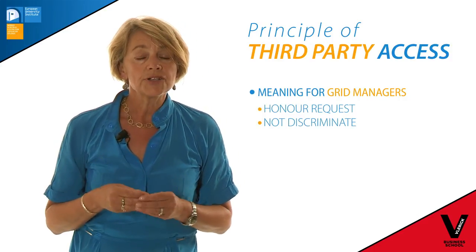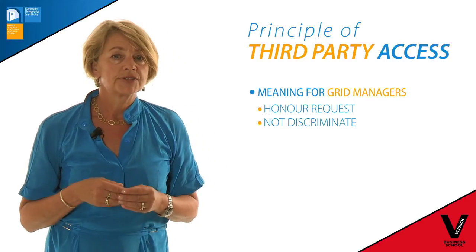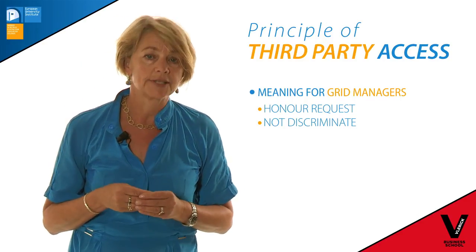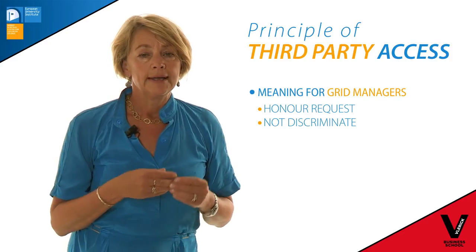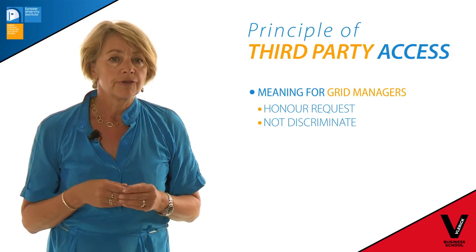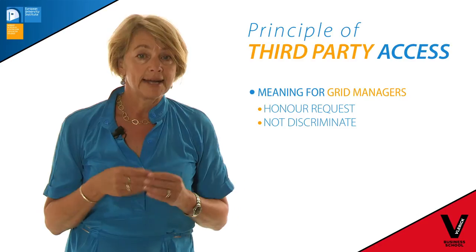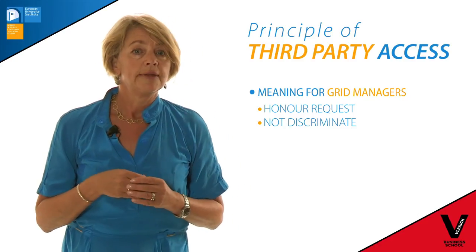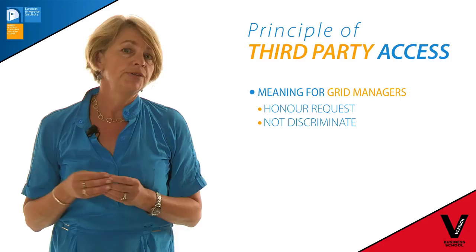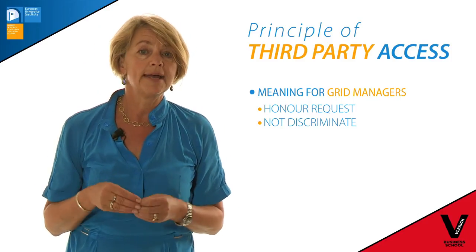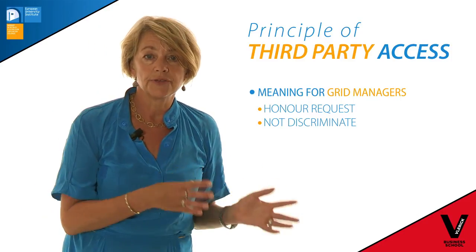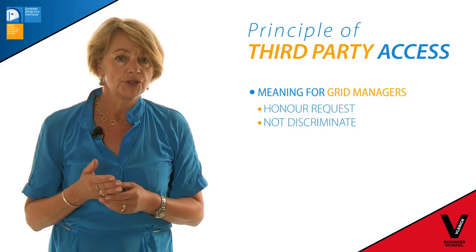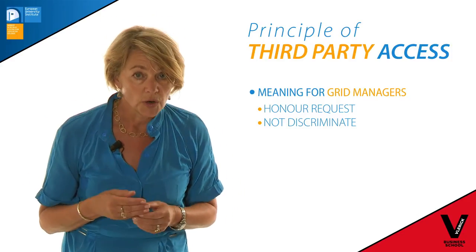More than that, you have to treat each request on the same terms — you must not discriminate. Therefore, if you're part of a large company that has supply interests as well as transmission interests, you must treat a third party in the same way as you would treat the supply arm of your own company. That way, you ensure there is no discrimination.